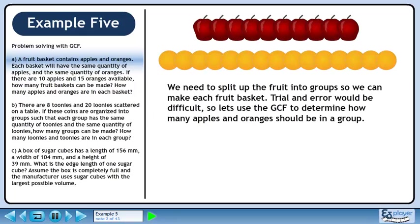We need to split up the fruit into groups so we can make each fruit basket. Trial and error would be difficult, so let's use the GCF to determine how many apples and oranges should be in a group.